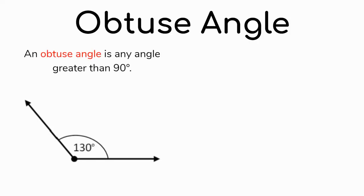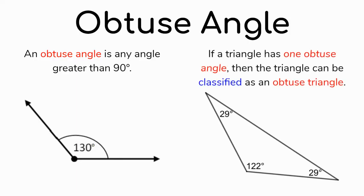The last type of angle we're going to discuss is an obtuse angle — any angle that is greater than 90 degrees. For example, an angle measuring 130 degrees is clearly bigger than 90, making it an obtuse angle. If a triangle has one obtuse angle, then we call that an obtuse triangle. It doesn't matter that the other two angles are acute — if it has an obtuse angle, it is an obtuse triangle.